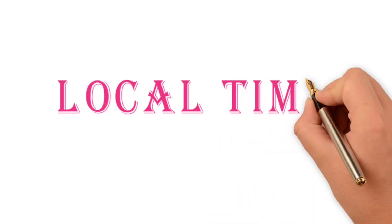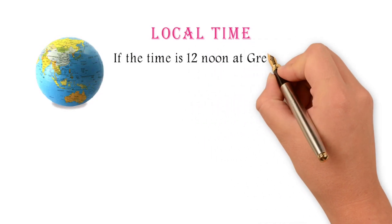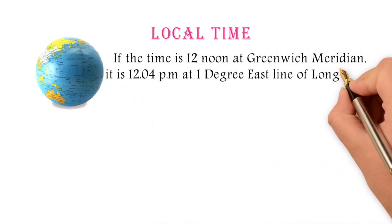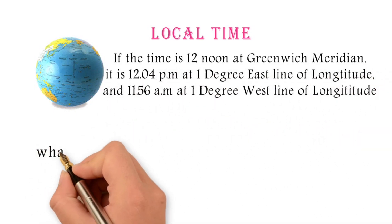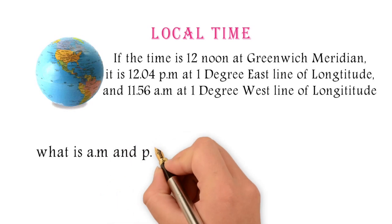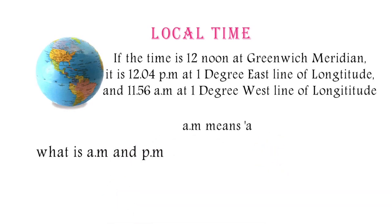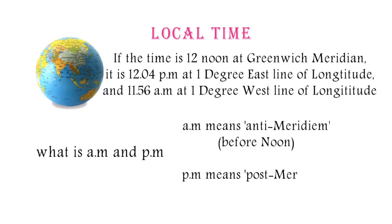Local Time. If the time is 12 noon at the Greenwich Meridian, it is 12:04 PM at 1 degree East and 11:56 AM at 1 degree West. AM means ante-meridian, before noon, and PM means post-meridian, afternoon.